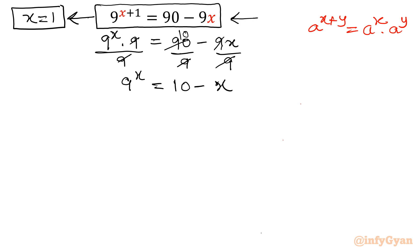Now, 9 power x is equal to 10 minus x. I will solve using substitution. So substitution is 10 minus x equal to t. So x will be equal to 10 minus t. So equation will convert 9 power 10 minus t equal to t.